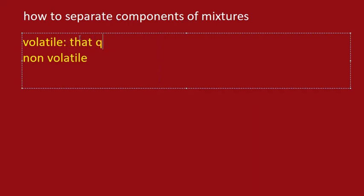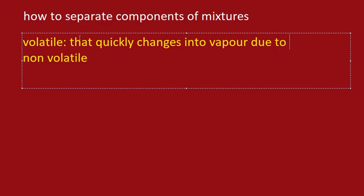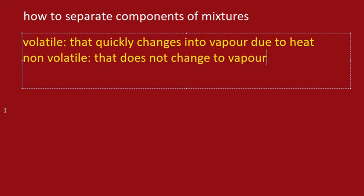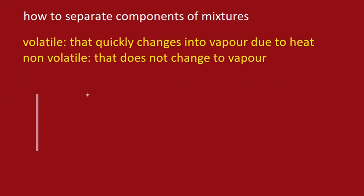A volatile substance is something that quickly changes into vapor due to heat, and a non-volatile substance does not change to vapor due to heat. Now suppose we have some ink. Ink is actually a mixture — rather, we can say it is a colloid — and it has two components: one component is the dispersing medium, that is normally water, and the other component is the dye which gives the ink its color.